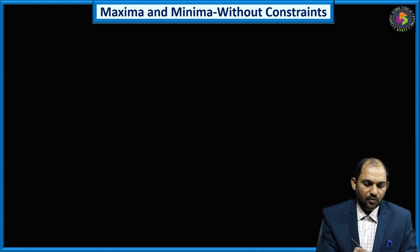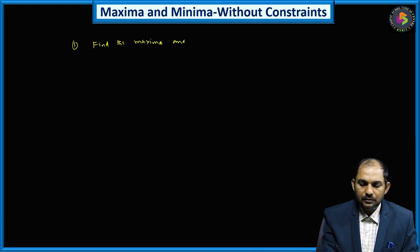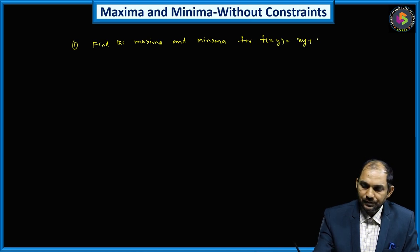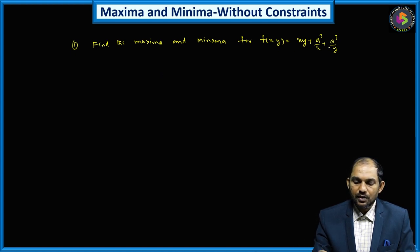Let us see the statement of the problem. The problem statement is: find the maxima and minima for f(x, y) = xy + a³/x + a³/y. This is a function involving two independent variables x and y, and there is no condition on this. That is why this problem comes under the class of maxima and minima without constraints.